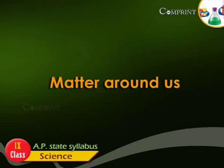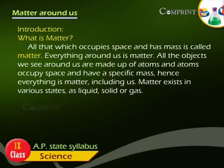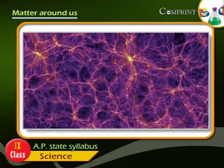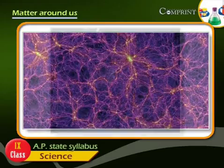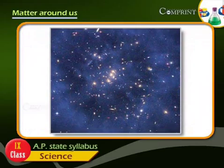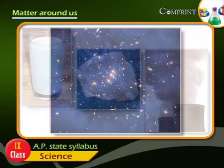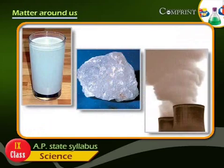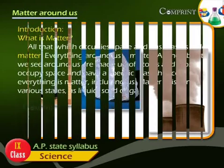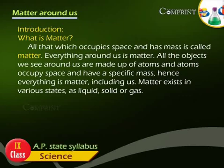Matter around us. All that which occupies space and has mass is called matter. Everything around us is matter. All the objects we see around us are made up of atoms, and atoms occupy space and have a specific mass. Hence, everything is matter, including us.